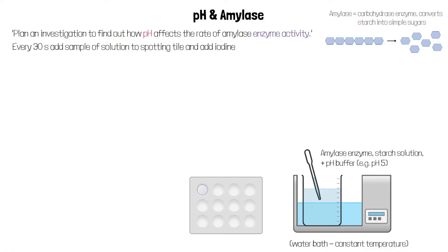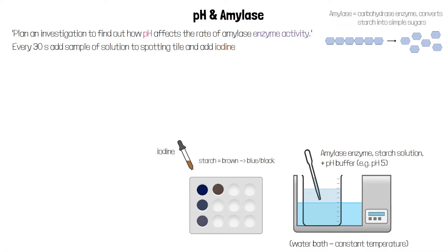Every 30 seconds we take a sample of the enzyme and starch solution and add it to a spotting tile. We then add a few drops of iodine. If starch is present in the solution it will turn blue-black. We keep taking samples every 30 seconds and testing them with iodine.